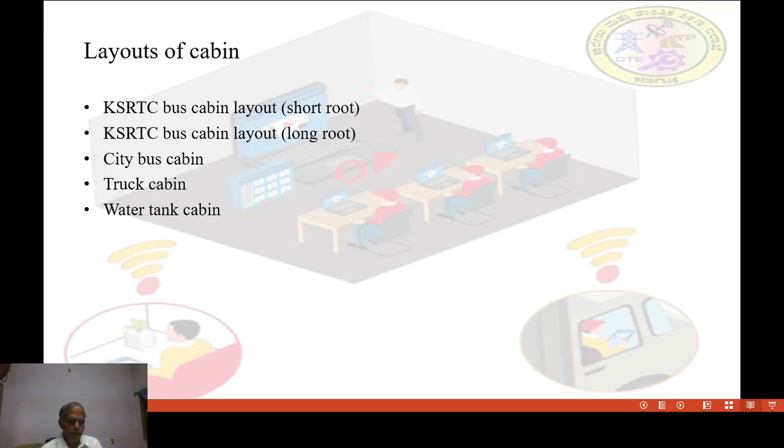And last one is water tank cabin. In water tank vehicle cabin is totally separate from water tank. There is no attachment to the water tank. Other arrangements same as truck and buses. Water tank is provided or mounted on chassis only. I have given more details in study material. You can refer the study material for study purposes.